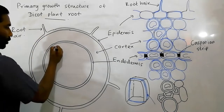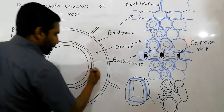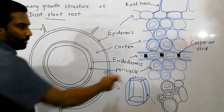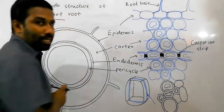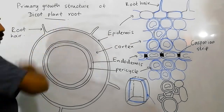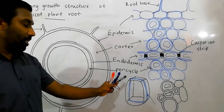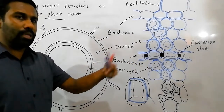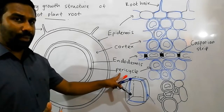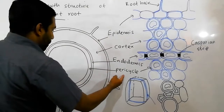Inner to the endodermis there is another tissue layer known as the pericycle. It consists of specialized parenchyma cells and may consist of two or three cell layers. In dicot roots, pericycle cells later get meristematic activity and involve in producing the lateral meristem known as the cork cambium during secondary growth.